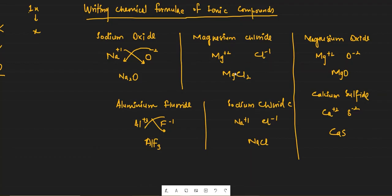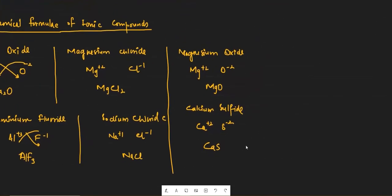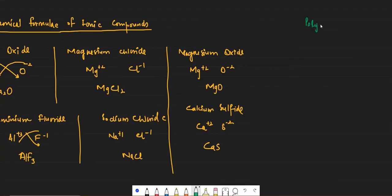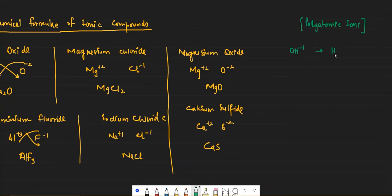So far we have been talking about elements or ions whose charges we can deduce from the periodic table. But not all charges can be deduced from the periodic table. There is a certain set of ions called polyatomic ions whose charges you need to memorize because you won't find them in the periodic table. These are ions made up of more than one type of atom.